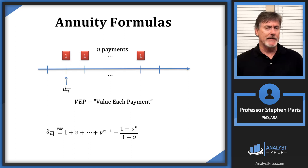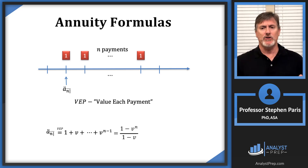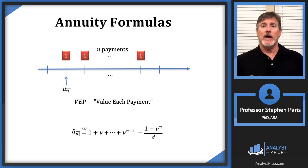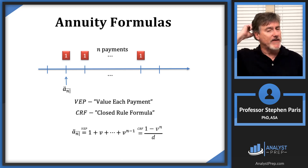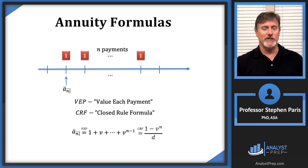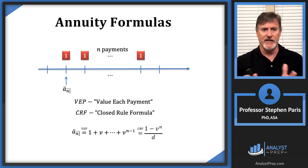I'm going to simplify that expression. I recognize that one minus v in the denominator: since v equals one minus d, the ones cancel and I'm just left with d in the denominator. So the closed-form formula for a-double-dot angle n is one minus v to the n, all over d. That's the VEP expression simplified to a single-term closed-form formula.